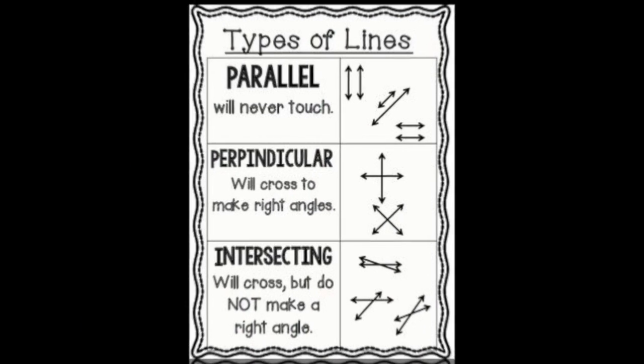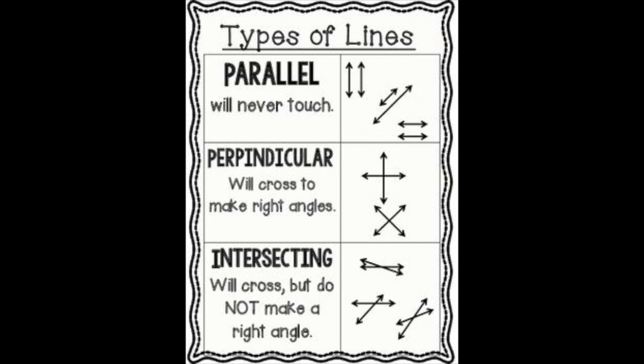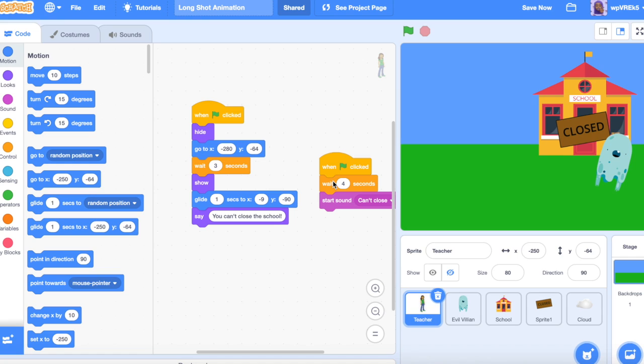Before we look at parallelism in code, we need to know what the word parallel means. Parallel is when two lines run side by side and they're never going to touch — like the two yellow lines on a road. In coding, we can make two pieces of code that run at the same time.